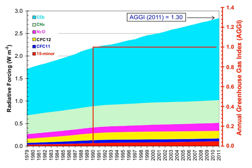At current emission rates, temperatures could increase by 2 degrees Celsius, which the United Nations IPCC designated as the upper limit to avoid dangerous levels, by 2036.